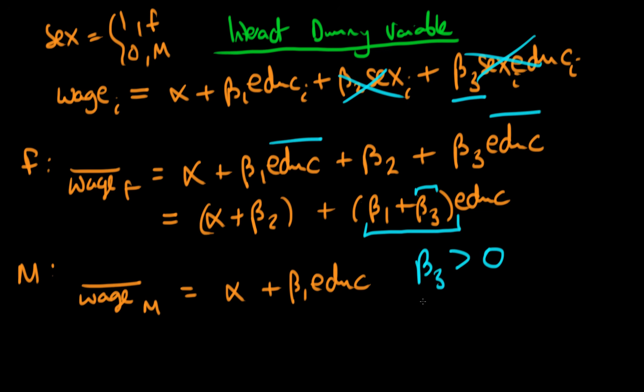If it was less than zero, then it would be the other way around. So the additional effect of having one more year of education on average would tend to cause a smaller increase in female wage than it would do for males.